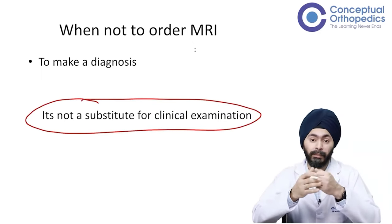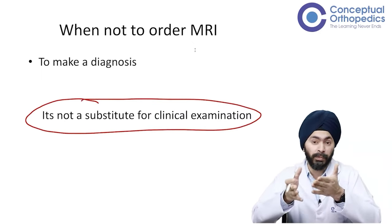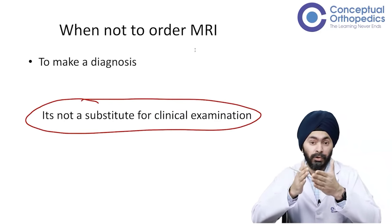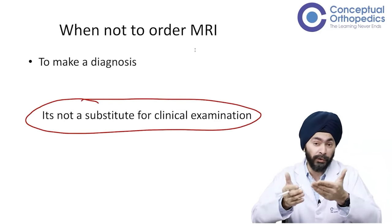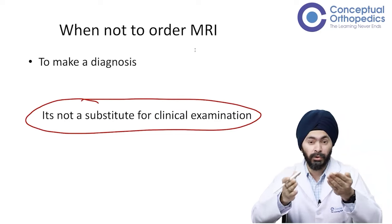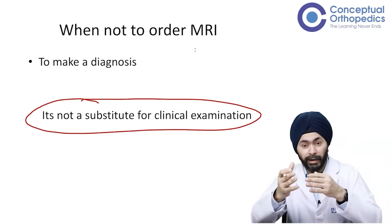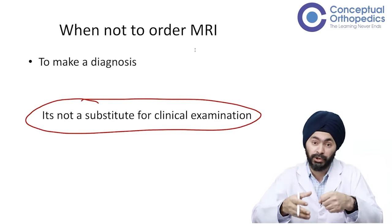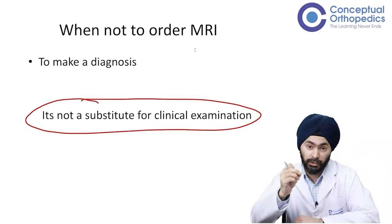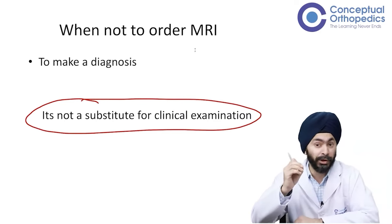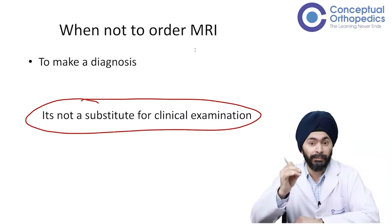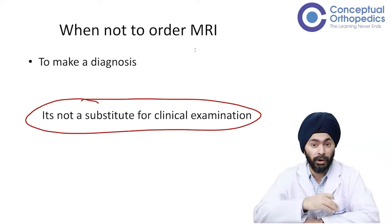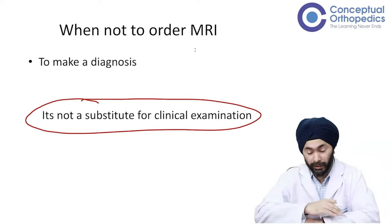What happens if you order an MRI without going through proper history, clinical exam, and x-ray? The MRI will throw a lot of findings and you will not be able to find out which finding is the cause of the pain or the problem in this patient. So always do your history, physical exam, get an x-ray done, and only after these reach out to your MRI if needed.